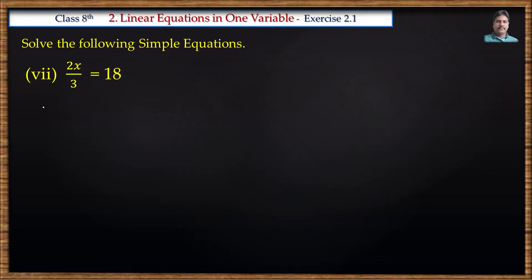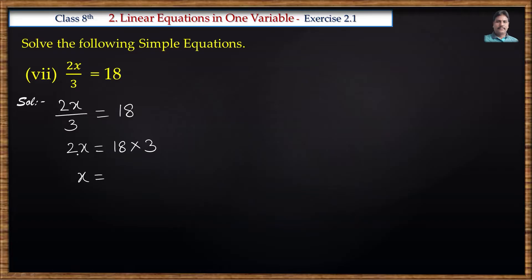Next problem: 2x by 3 is equal to 18. We transpose 3 to the right side and multiply: 2x is equal to 18 into 3. Then we transpose 2 to the right side and divide: x is equal to 18 into 3 by 2. 2 nines are 18, so x is equal to 9 into 3, which is 27.